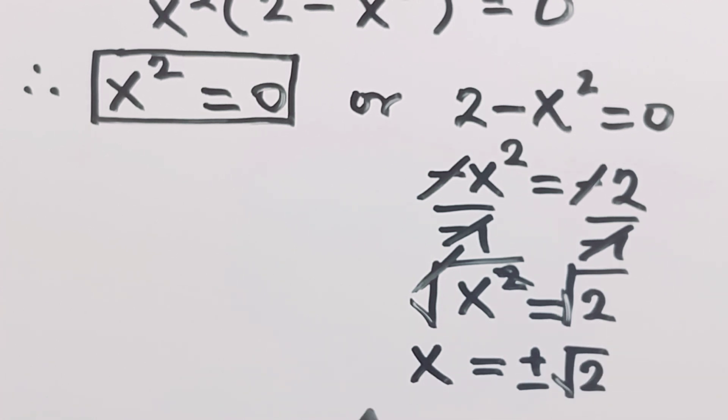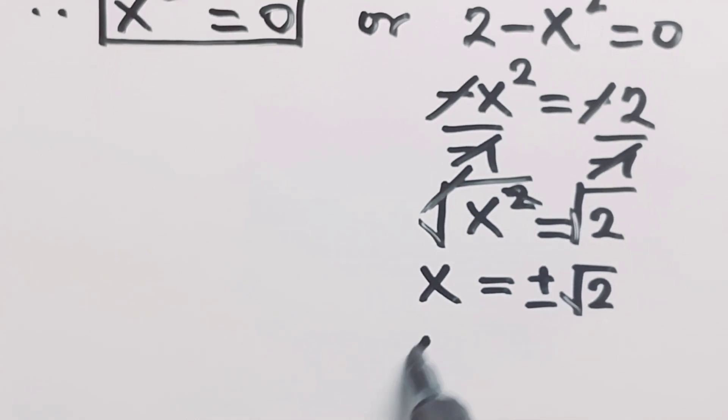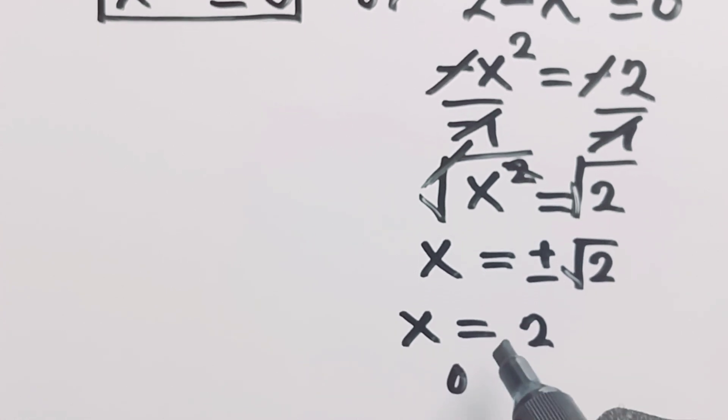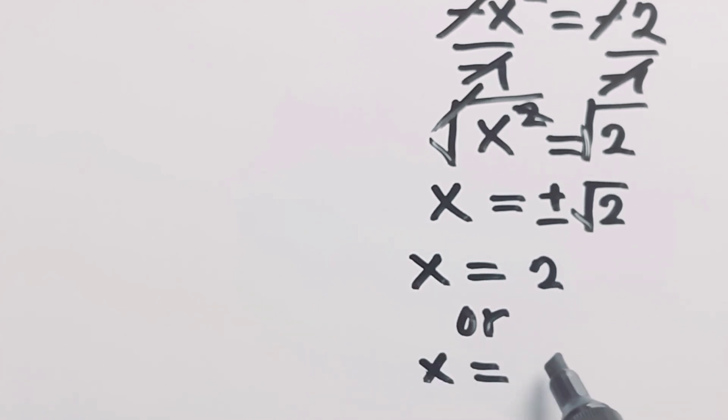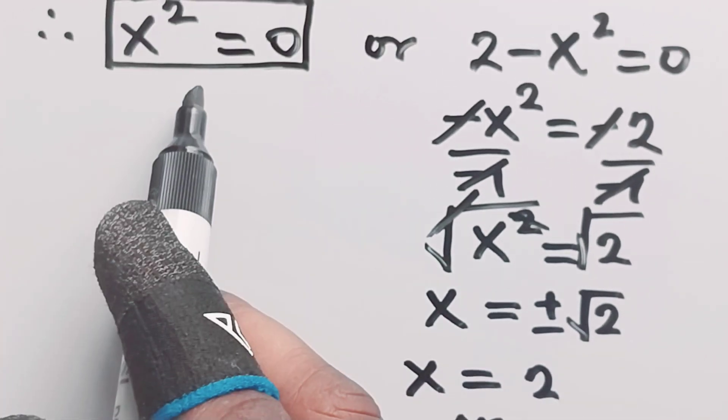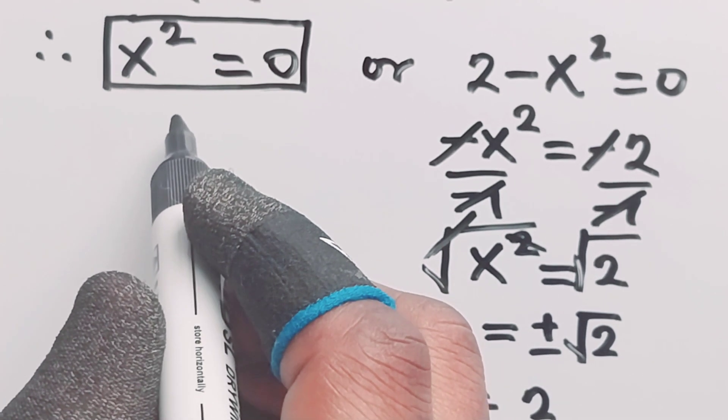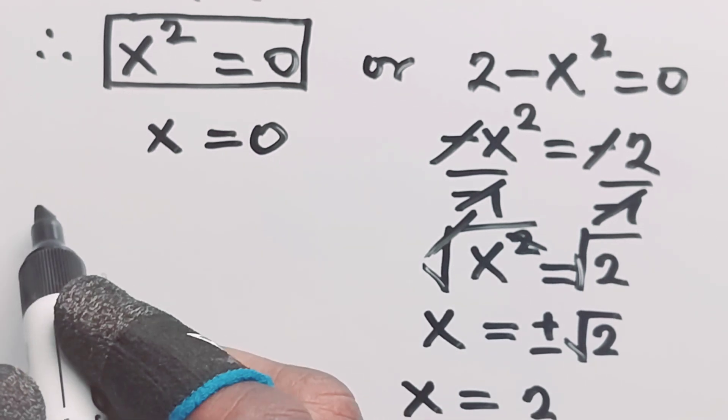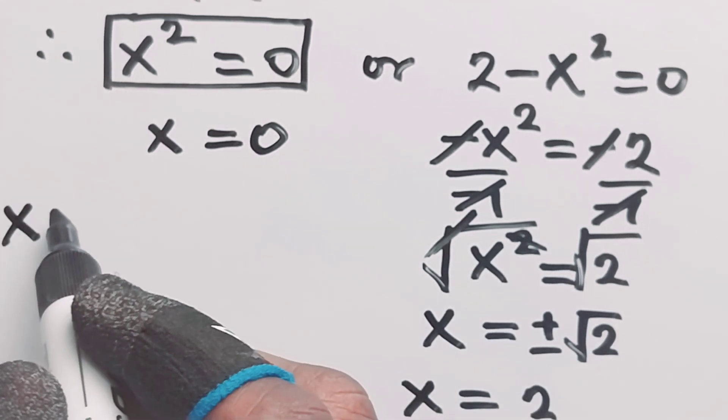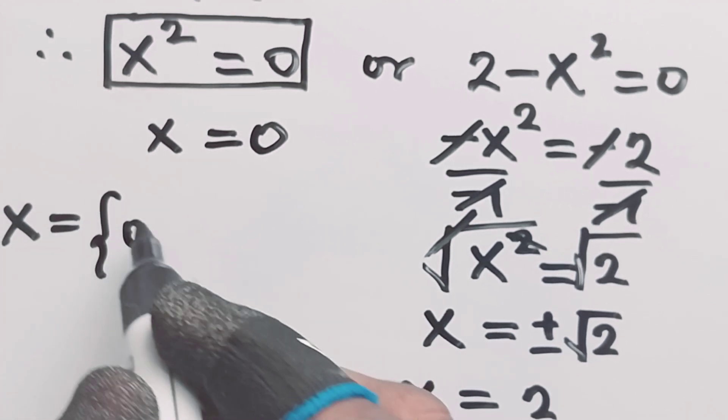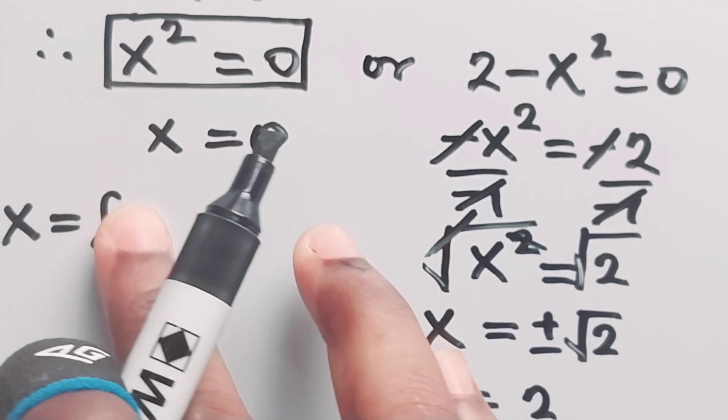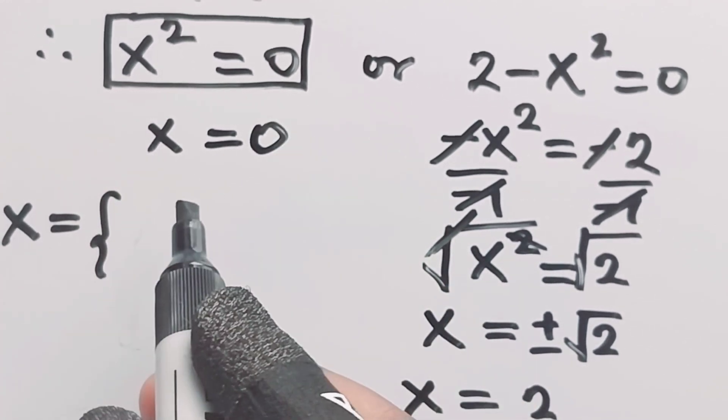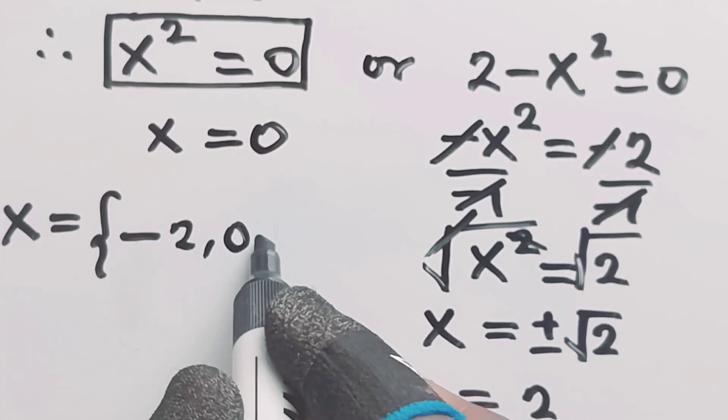So here we have two answers which means that x is equal to square root of 2, or x is equal to minus square root of 2, and then together with the first one we got, if x squared is equal to 0 that also means that x is equal to 0. So our values for x are minus square root of 2, comma 0, comma square root of 2.